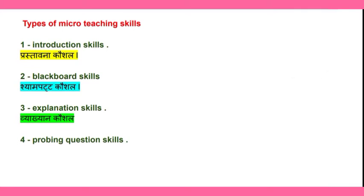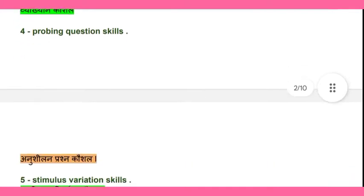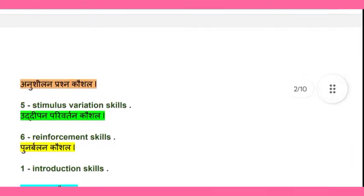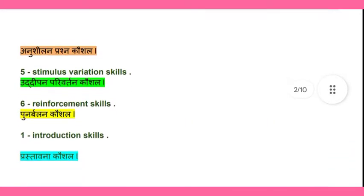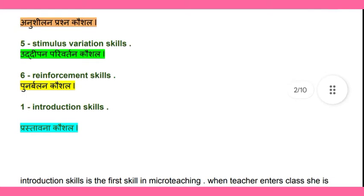Third is explanation skill (Vyakhyan Kaushal), fourth is probing question skills (Anushilan Prashna Kaushal), fifth is stimulus variation skills (Uddipan Parivartan Kaushal), and the last one is reinforcement skill (Punarbalan Kaushal).